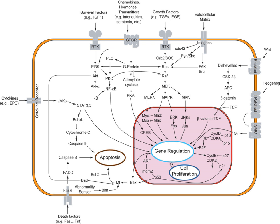Some signaling transduction pathways respond differently depending on the amount of signaling received by the cell. For instance, the Hedgehog protein activates different genes depending on the amount of Hedgehog protein present. Complex multi-component signal transduction pathways provide opportunities for feedback, signal amplification, and interactions inside one cell between multiple signals and signaling pathways.